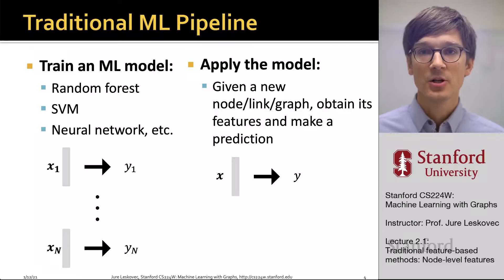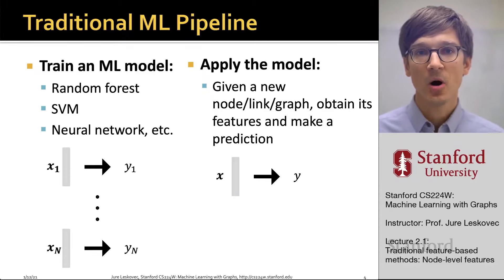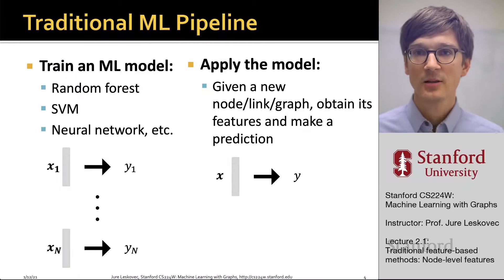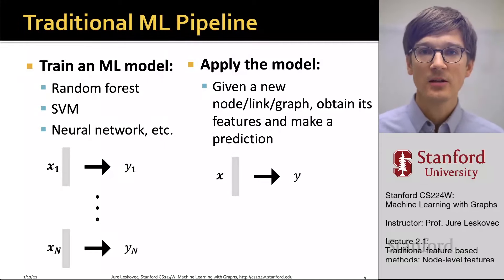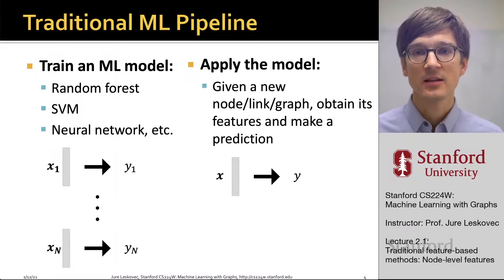Traditionally, in traditional machine learning pipelines, we have two steps. In the first step, we are going to take our data points — nodes, links, entire graphs — and represent them with vectors of features. Then on top of that, we are going to train a classical machine learning classifier or model, for example a random forest, perhaps a support vector machine, a feed-forward neural network, or something of that sort, so that in the future, when a new node, link, or graph appears, we can obtain its features and make a prediction.